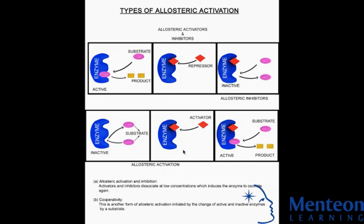In biochemistry, allosteric regulation is the regulation of an enzyme or other protein by binding an effector molecule at the protein's allosteric site, that is a site other than the protein's active site.